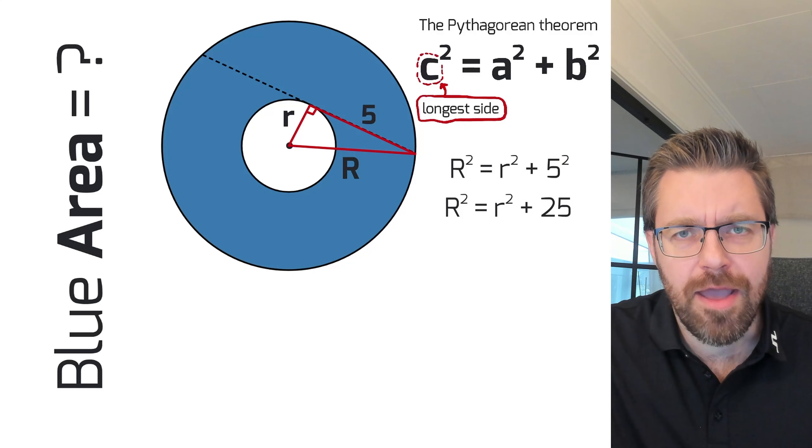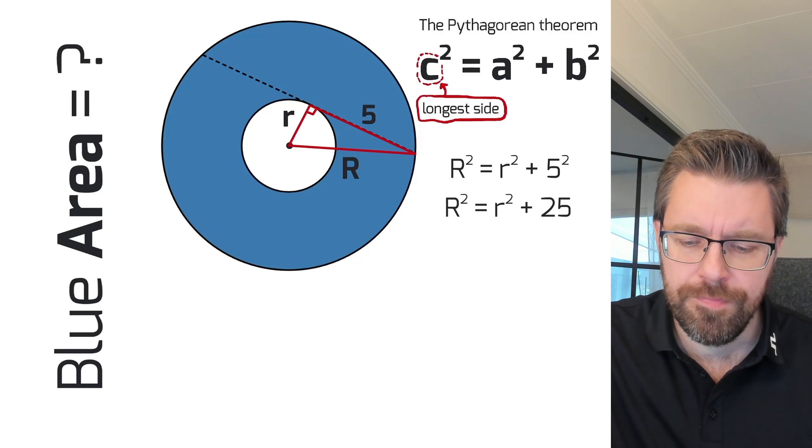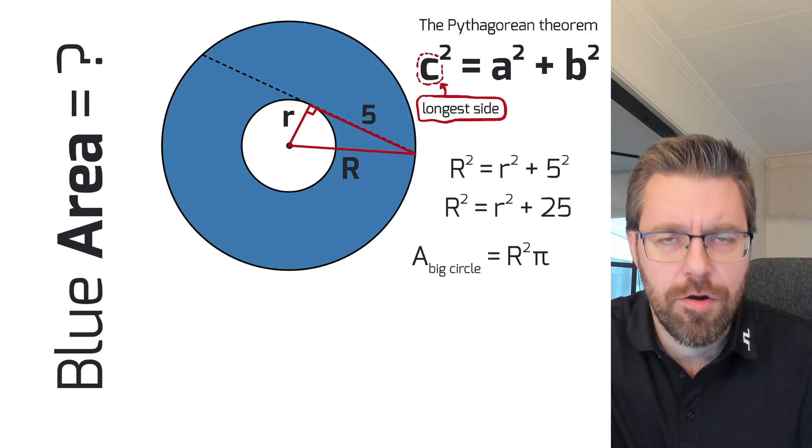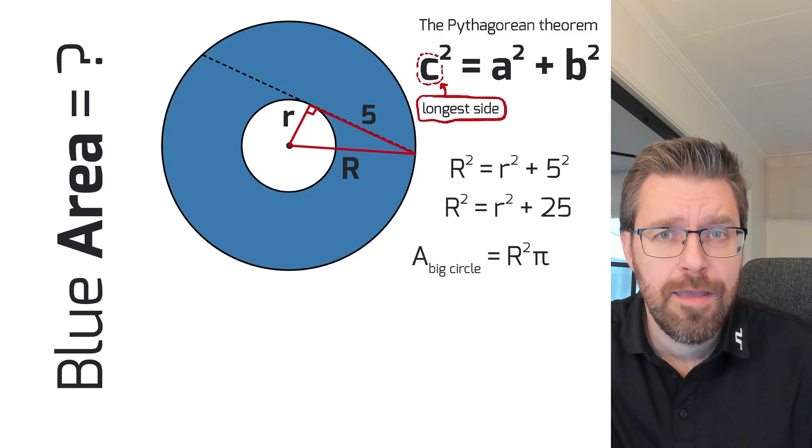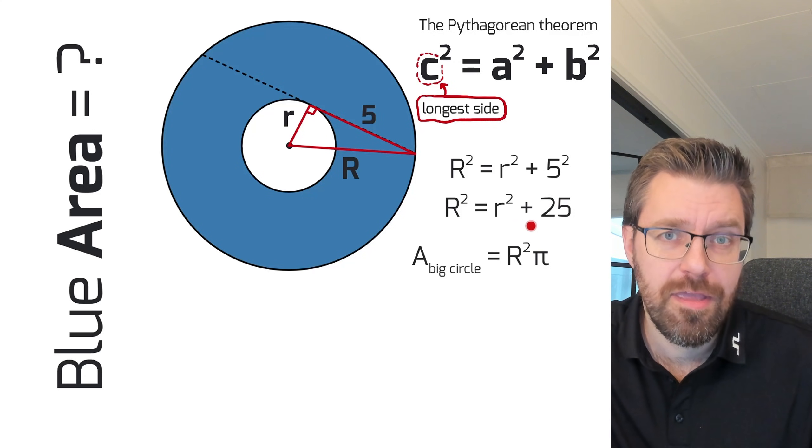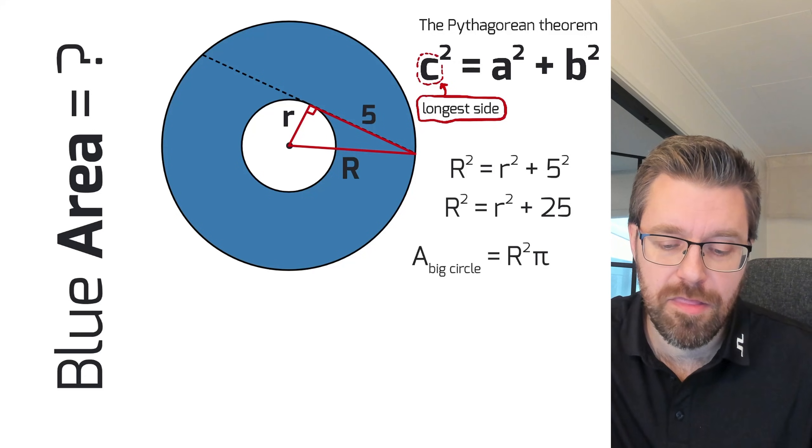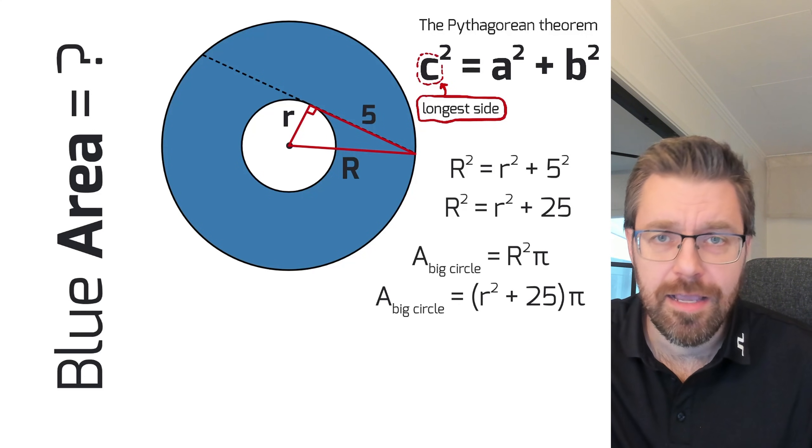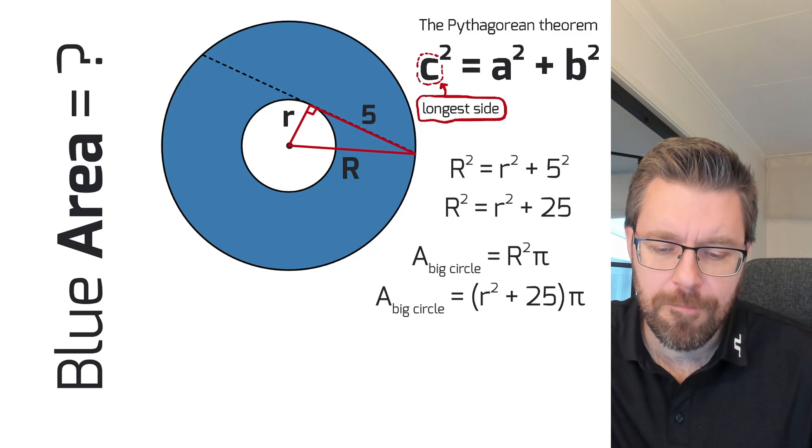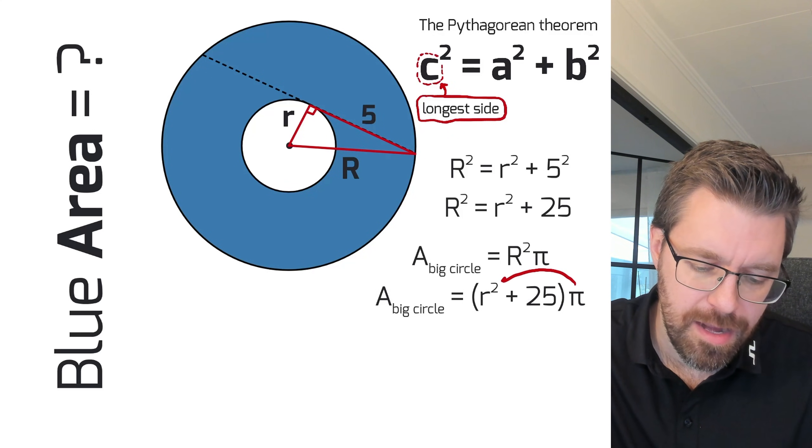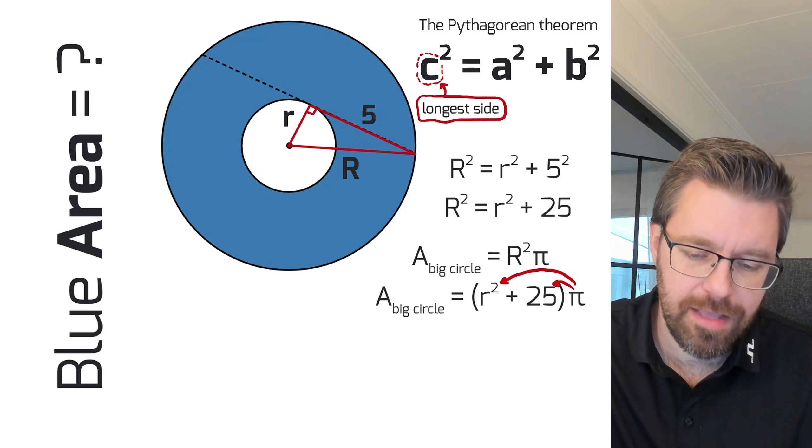The area of the big circle can be written like this: big R² times π. But we can replace big R² with this bit, because it equals big R². So the area of the big circle can be written like this too. And then we can take π and multiply it inside the parentheses like this.